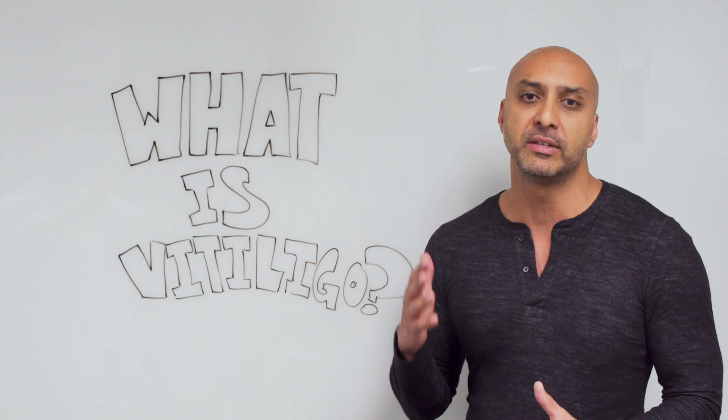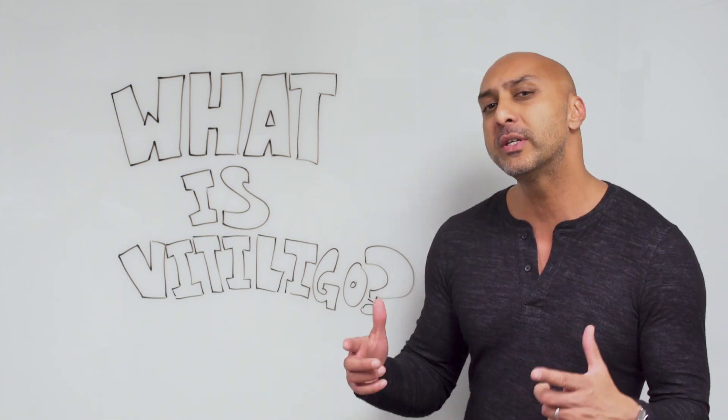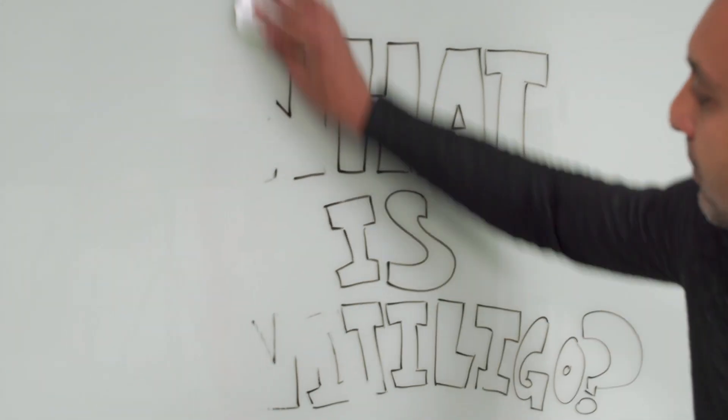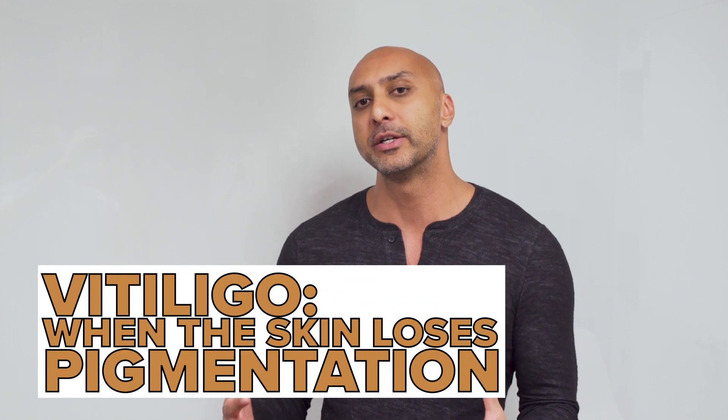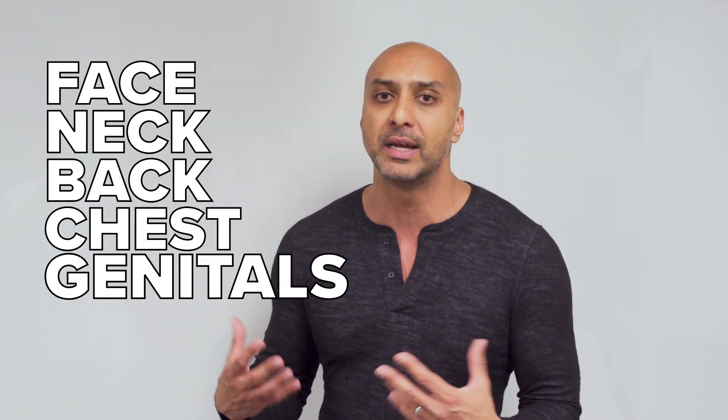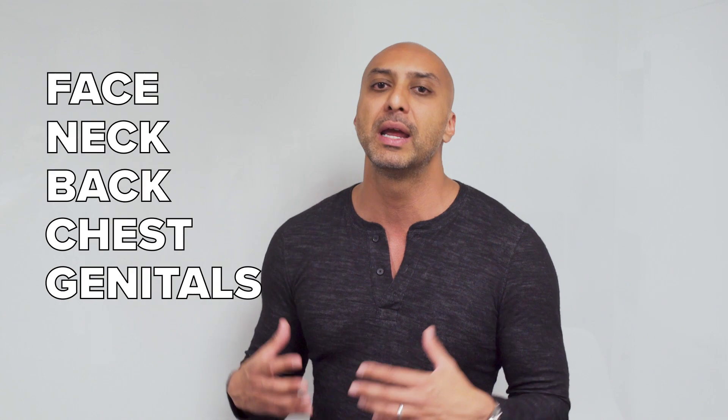Most of you have heard of the disease called vitiligo, but what is vitiligo? Vitiligo is a potentially devastating skin condition where patients lose pigmentation in their skin. In some patients it's a mild condition with just one or two spots, but in the most severe cases it can affect broad areas — the face, neck, back, chest, and even genital skin. In our most severe cases it causes a lot of distress for our patients.